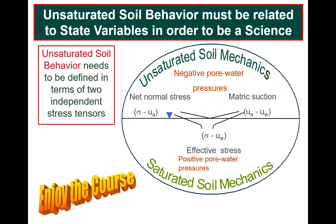Unsaturated soil mechanics has emerged in geotechnical engineering as an applied science because the physical processes of seepage, shear strength, and volume change can be described in terms of changes in two independent stress state variables. The elliptical world illustrated in this slide shows in a simplified way why two independent variables are needed. Two stress state variables are required because changes in the total stress variable produce different responses than changes in the pore fluid variable. The remaining lessons will show how classic saturated soil mechanics formulations can be extended to embrace unsaturated soil mechanics. I hope you enjoy the course.